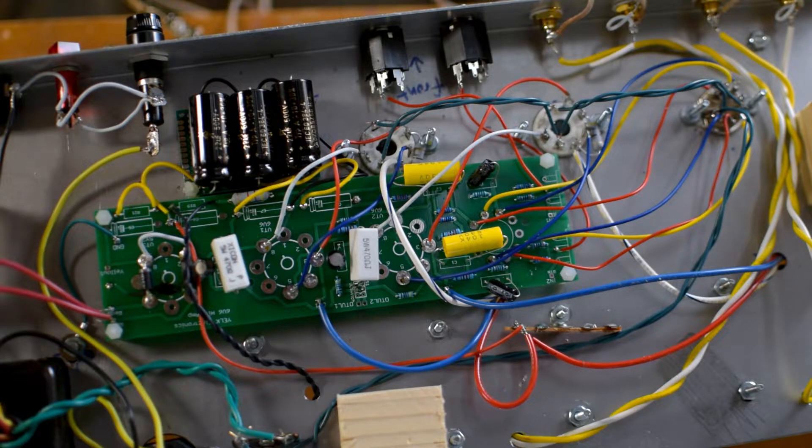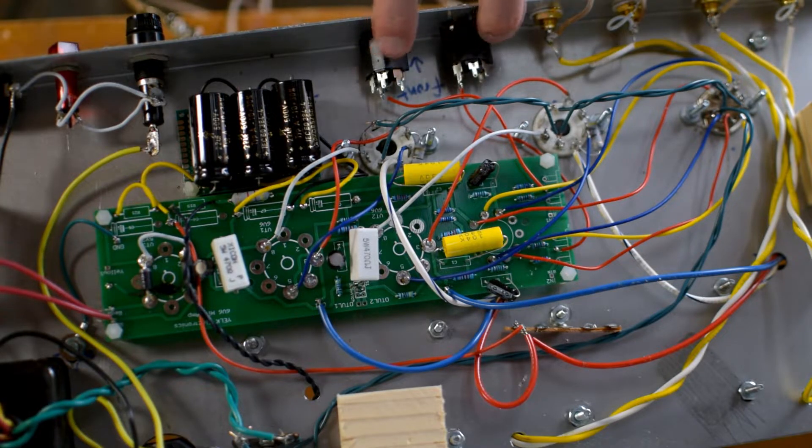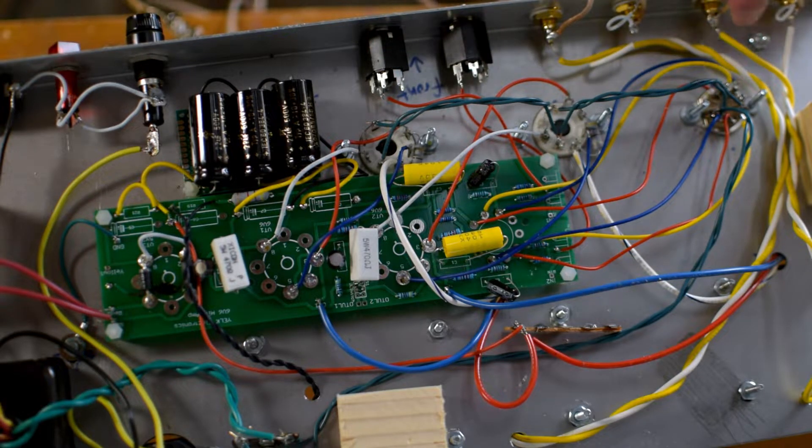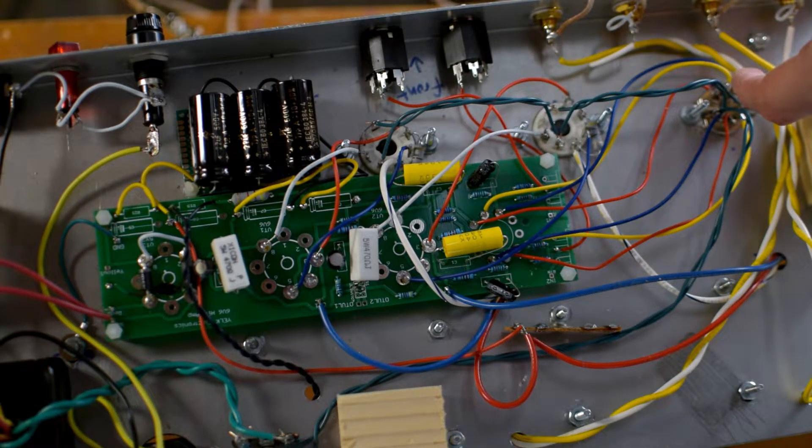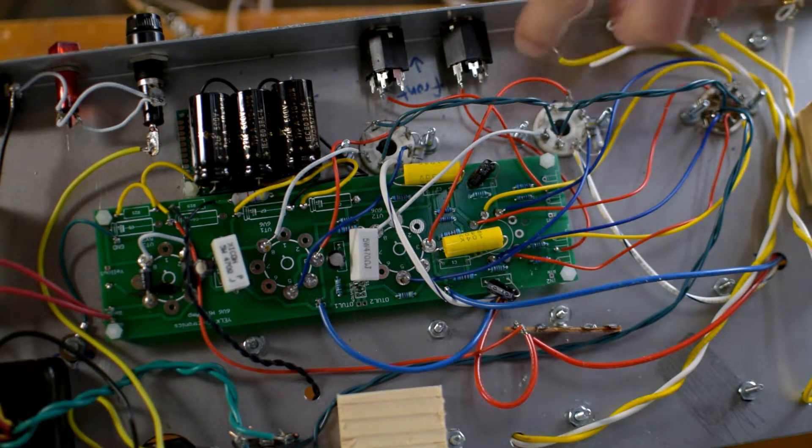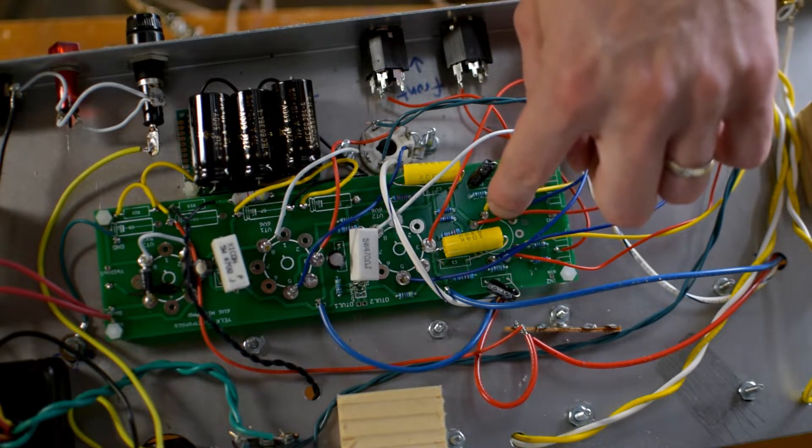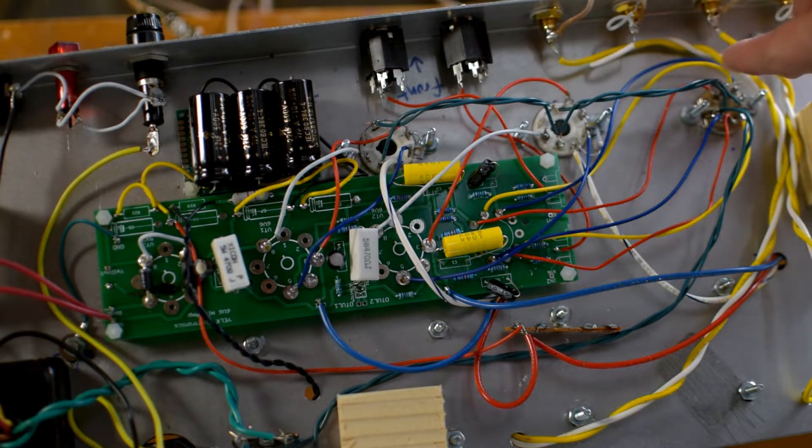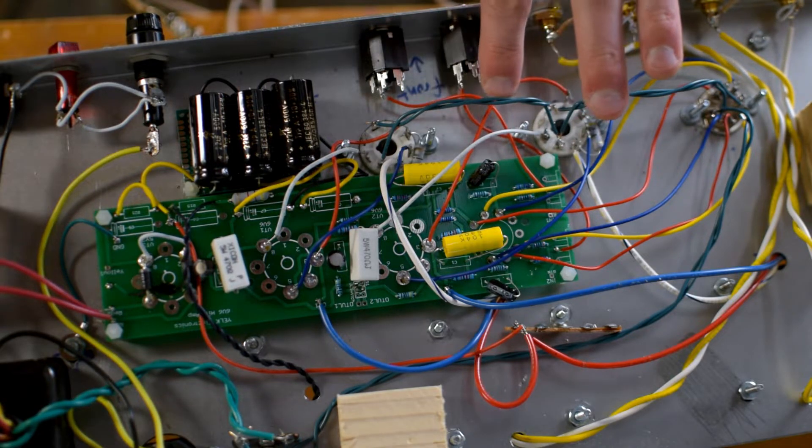I've got right here my two input quarter-inch jacks. I'm going to move these over here so that they are right next to this V1 input tube. Instead of running a red wire here to the board, I've got these two resistors running to this part of the circuit over here to the tube, and that is just a very poor and inefficient way of doing things.